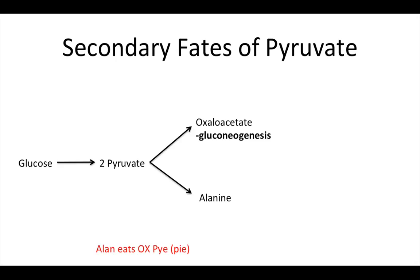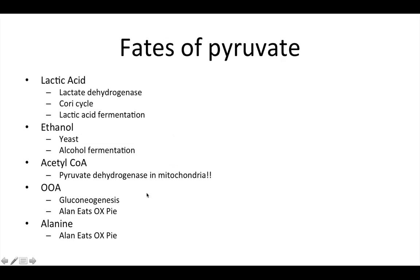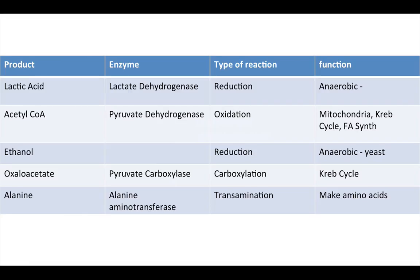One thing to keep in mind: the step from pyruvate to acetyl-CoA happens in the mitochondria — we're no longer dealing with glycolysis, and it doesn't happen in the cytosol. Oxaloacetate: the reaction pyruvate to oxaloacetate occurs in gluconeogenesis. Remember, 'Alan eats ox pie.' Here's a table that reviews all of that, listing the enzymes and type of reaction with fun facts — feel free to pause and look at it.